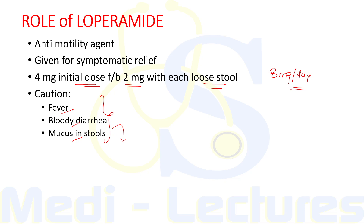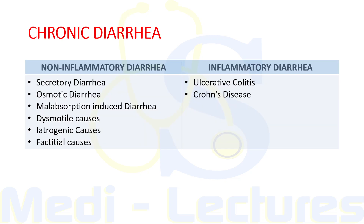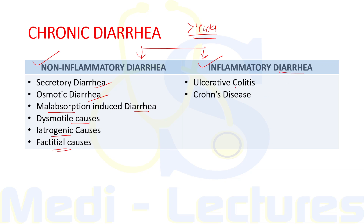In summary, we have discussed how to approach a patient presenting with acute diarrhea in the OPD: how to treat dehydration and hypovolemia, how to manage infection, and what lab tests are required. For completeness, chronic diarrhea is defined as diarrhea present for more than four weeks. It is broadly divided into non-inflammatory causes — including secretory, osmotic, malabsorption-induced, dysmotility, iatrogenic, and factitial causes — and inflammatory causes such as IBD, which includes ulcerative colitis and Crohn's disease.